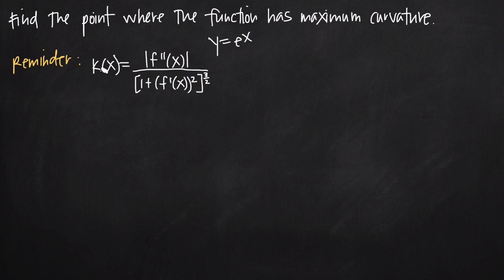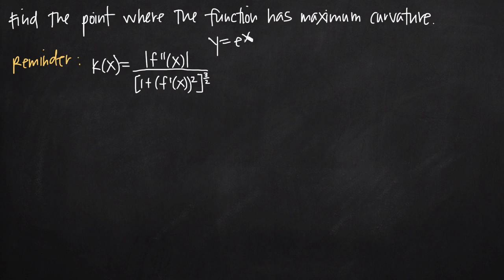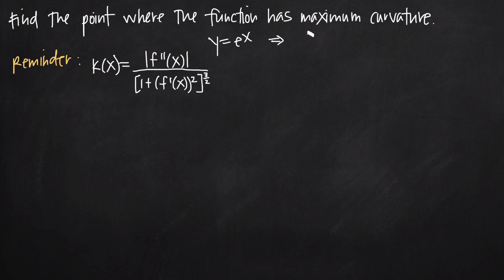Usually when we're talking about curvature it's in relation to vector functions, where we look at k of t, where k is the curvature kappa. But in this particular problem we just have a regular function y in terms of x — not a vector function. When we're given a regular function y in terms of x, we can use a different formula: k of x instead of k of t. Let's call it f of x equals e to the x so it matches our formula.